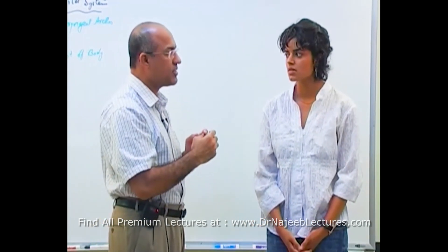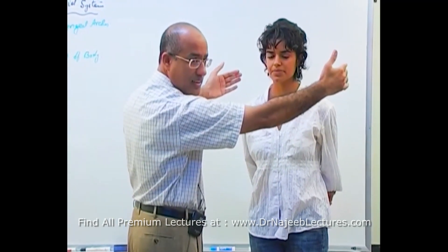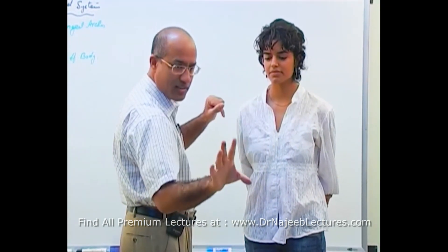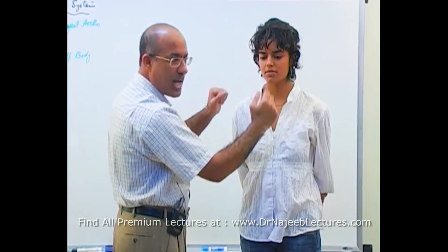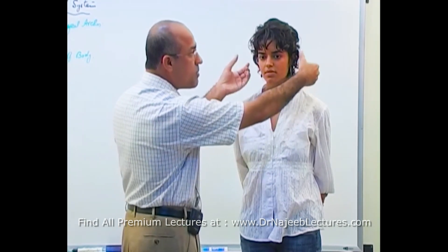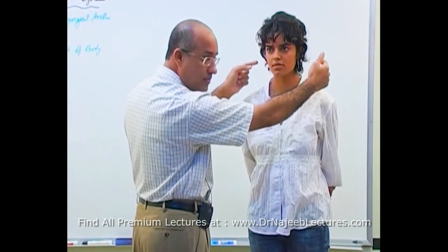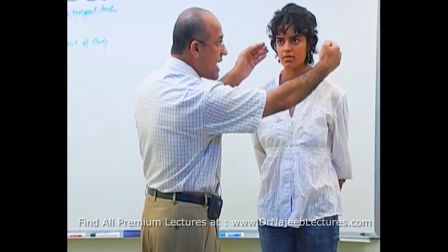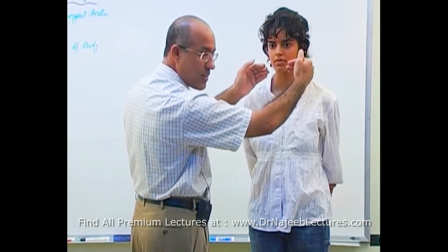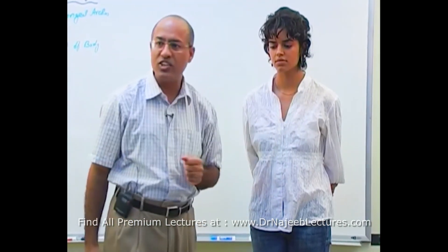What really happens is that the mesoderm on the side of the pharynx — suppose there is ectoderm here, mesoderm here, and an endodermal tube which is the GIT. In the upper part, this is the pharynx. The mesoderm around the pharynx starts to proliferate, and when it proliferates too much, this mass of mesoderm grows forward and downward.